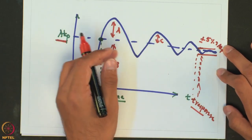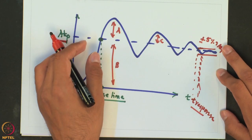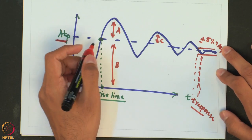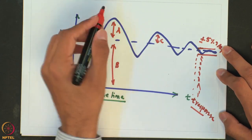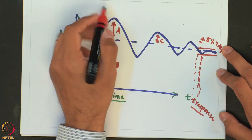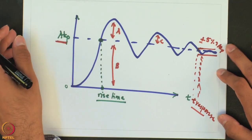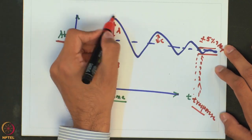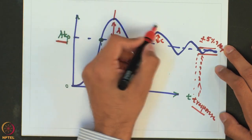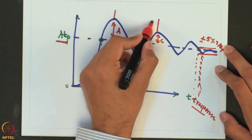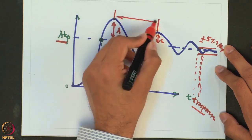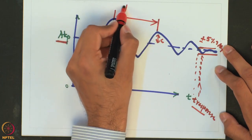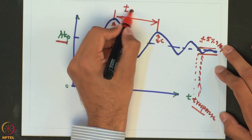Lastly, the period of oscillation is a fundamental characteristic of any sinusoid. If we have an oscillating response, the period of oscillation is the difference between any two successive peaks.